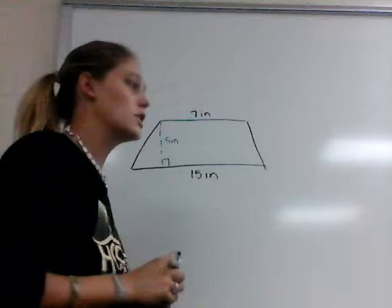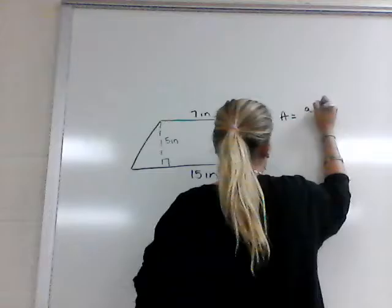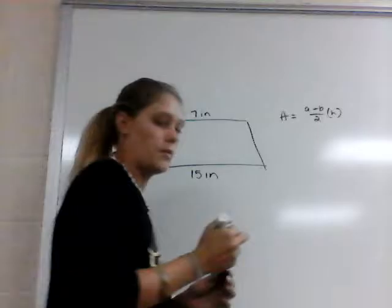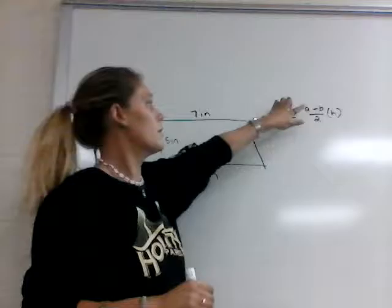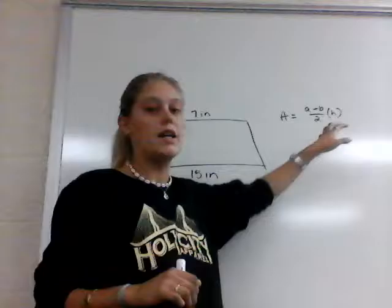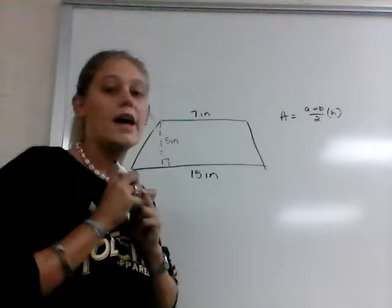The formula we are going to use today is: area equals (a plus b) over 2, multiplied by h. So that means the length of side 1 plus the length of side 2, divided by 2, multiplied by our height, is what gives us the area of our trapezoid. So we can go ahead and plug these numbers in.